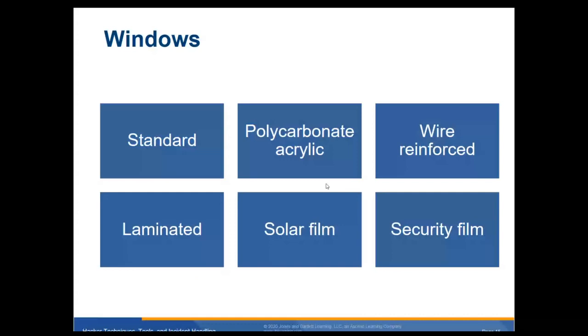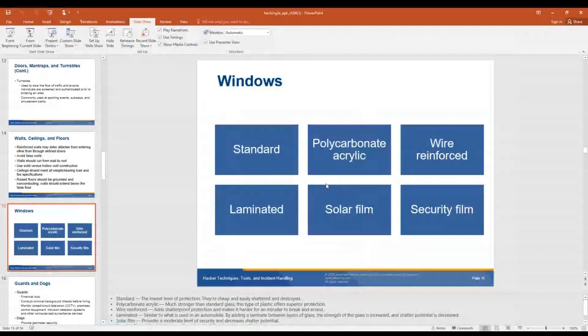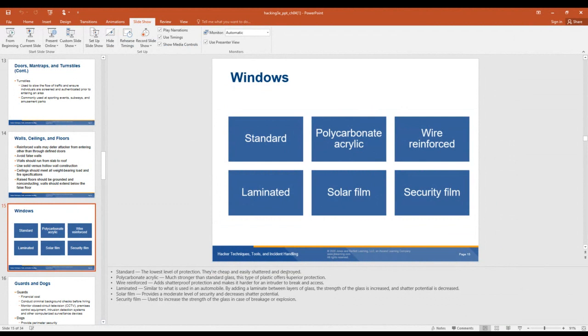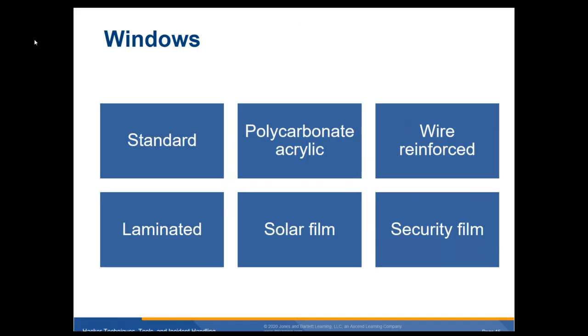Windows: you have standard carbon acrylic — lowest level of protection, easily cheap and shattered. Polycarbonate is much stronger than standard glass — this type of plastic offers superior protection. Wire reinforced is where if you hit it, it may crack but it doesn't shatter. Laminate is similar to automobile glass. Solar film provides a moderate level of security with decreased shatter potential, and security film is used to increase the strength of glass in case of breakage or explosion.